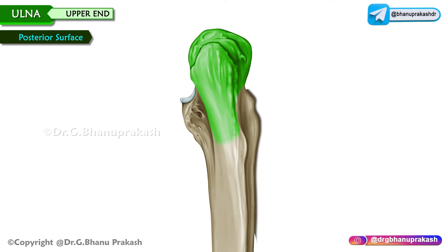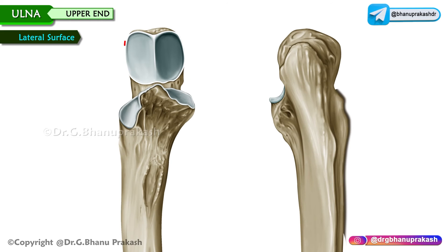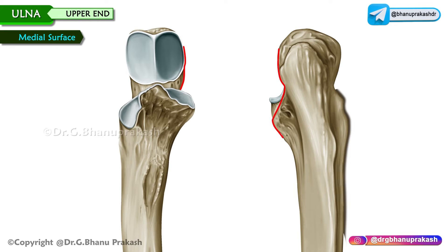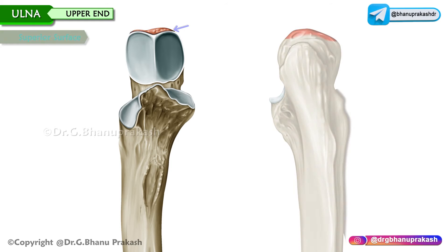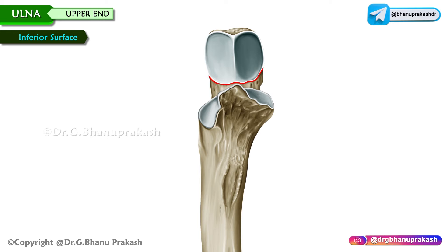The posterior surface is smooth and subcutaneous. The upper border forms the point of the elbow and is separated from the skin by a bursa. The lateral surface is continuous with the posterior surface of the shaft. The medial surface is continuous with the medial surface of the shaft. The superior surface is rough and separated from the anterior surface by a sharp margin; the capsule of the elbow joint is attached to it. The inferior surface is fused with the shaft.